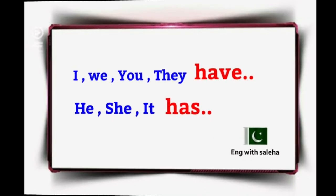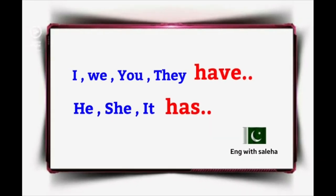Have or Has — we use 'have' when the sentence starts with I, We, You, or They. So we won't write 'I has' or 'we has' or 'they has' or 'you has'. Instead: I have, we have, you have, and they have. Similarly, with He, She, It we use 'has', not 'have'.